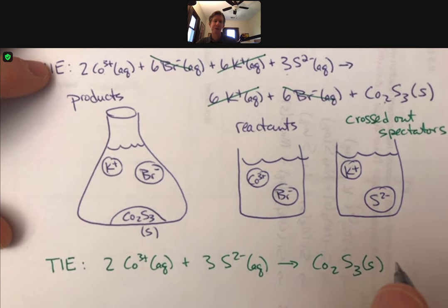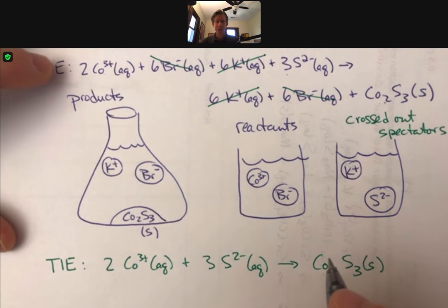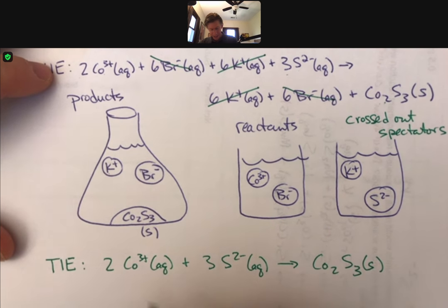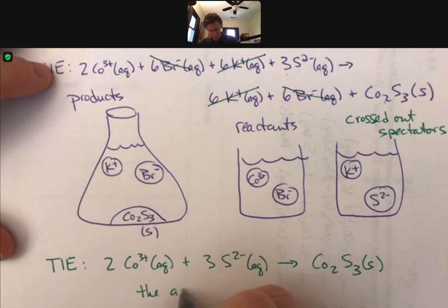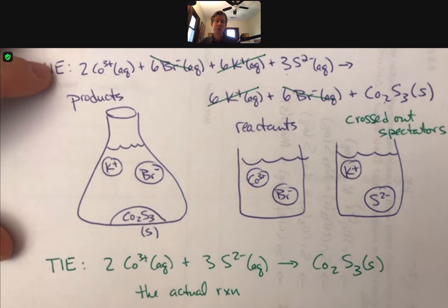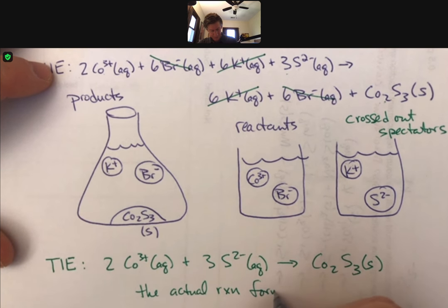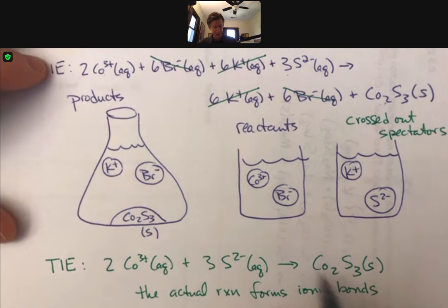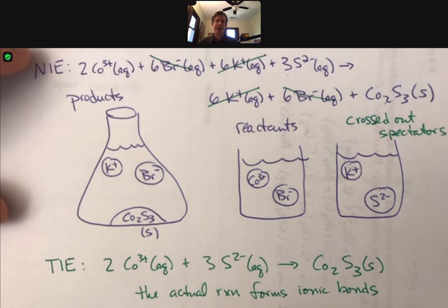And why do we do the total ionic equation? We do it because this is the actual reaction. And this actual reaction forms ionic bonds to make an ionic solid. Forms ionic bonds to make this, which is an ionic solid. Hope that helps.